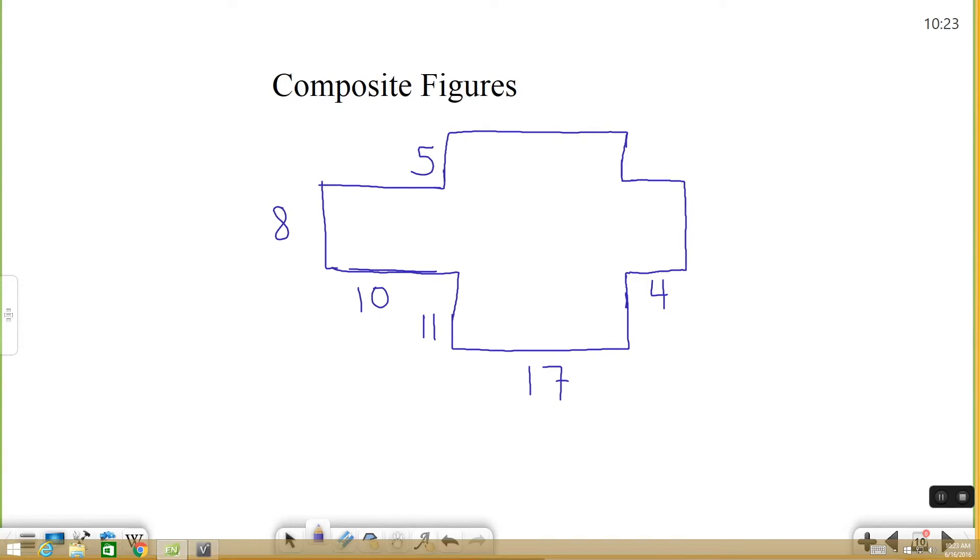Composite figures. A composite figure is just a fancy way of saying a weirdly shaped figure. It's something that looks like this. It's not a perfect rectangle or triangle or square or whatever. But what you'll see with these types of problems is a bunch of different values for the lengths of sides and they'll ask you what's the perimeter of this? What's the area of this?